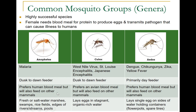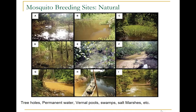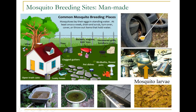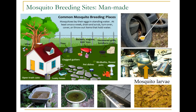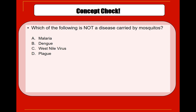Anopheles is found in fresh or salt water marshes, swamps, rice fields, and edges of rivers, streams, and pools. Culex prefers stagnant water with organic material. Aedes has highly evolved to live where people live — it lays single eggs on the sides of water-holding containers such as flower pots, spare tires, and similar items. Here you can see typical natural mosquito breeding sites, and here man-made breeding sites, such as small pools of water collected near human habitation, which are breeding grounds especially for Aedes aegypti, which has adapted to live near humans.